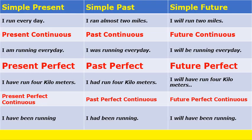Dear students, I am summing up all twelve tenses in one table using the verb 'run.' Simple present: 'I run every day.' Present continuous: 'I am running every day.' Present perfect: 'I have run four kilometres.' Present perfect continuous: 'I have been running.' Simple past: 'I ran almost two miles.' Past continuous: 'I was running every day.' Past perfect: 'I had run four kilometres.' Past perfect continuous: 'I had been running.' Simple future: 'I will run two miles.' Future continuous: 'I will be running every day.' Future perfect: 'I will have run four kilometres.' Future perfect continuous: 'I will have been running.'